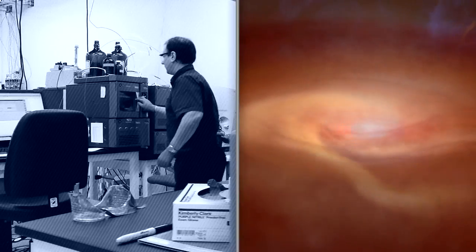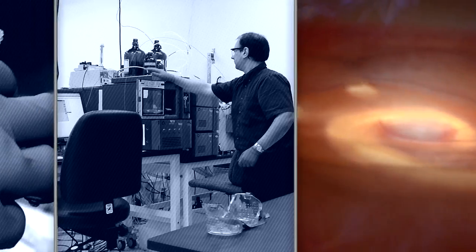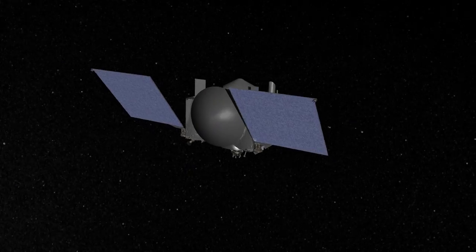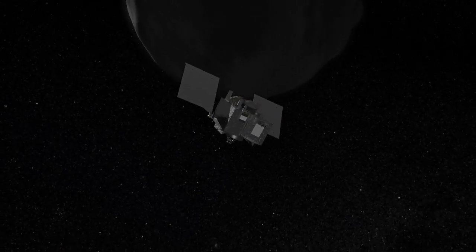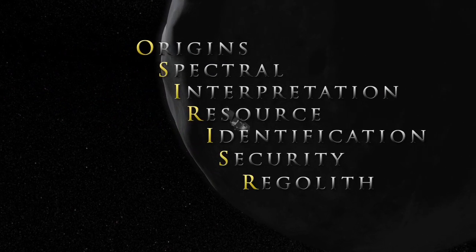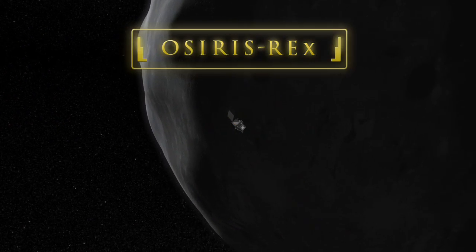If you want to study a piece of the early solar system in a lab on Earth, what do you do? To better understand the evolution of our solar system, NASA is sending the Origins Spectral Interpretation Resource Identification Security Regolith Explorer, or OSIRIS-REx.